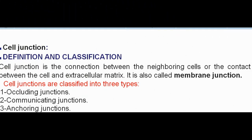Definition and classification: A cell junction is the connection between neighboring cells or the contact between the cell and extracellular matrix. It is also called a membrane junction. Cell junctions are classified into three types: occluding junctions, communicating junctions, and anchoring junctions.